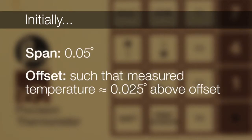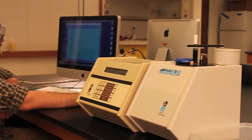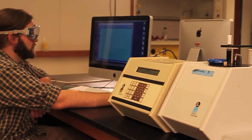The conversion from voltage to temperature can be found in the lab handout. Initially, set the span to 0.05 degrees and the offset to a value such that the measured temperature is approximately 0.025 degrees above the offset. In other words, you want to start data collection in the middle of the range.